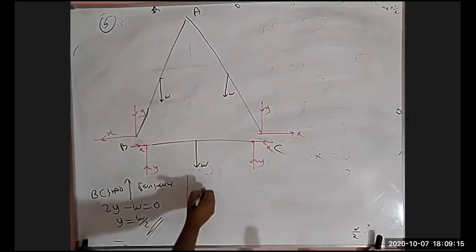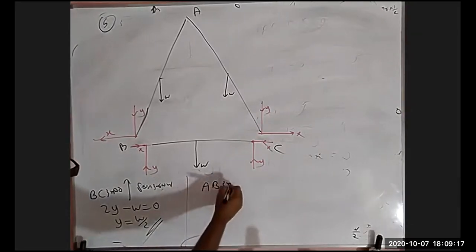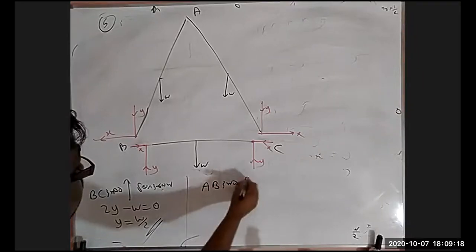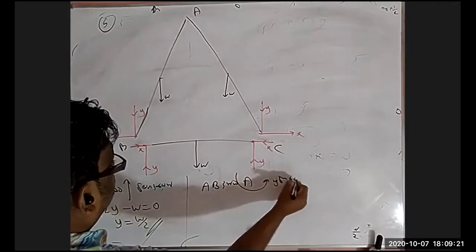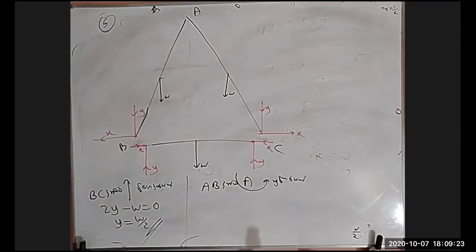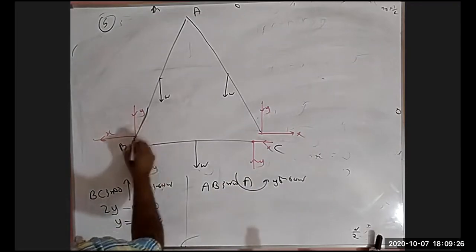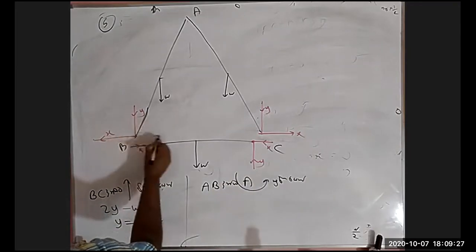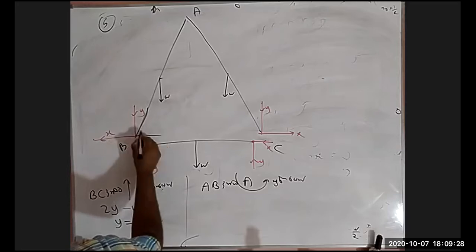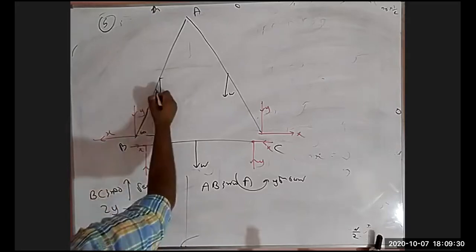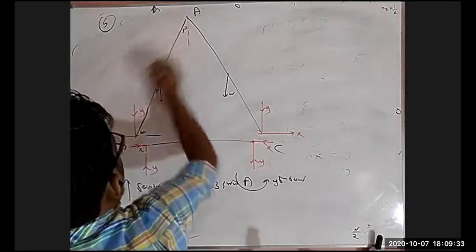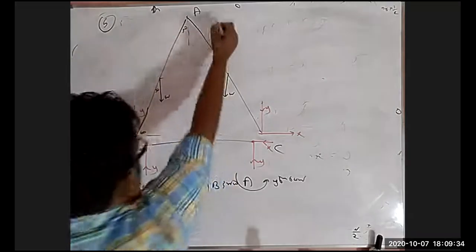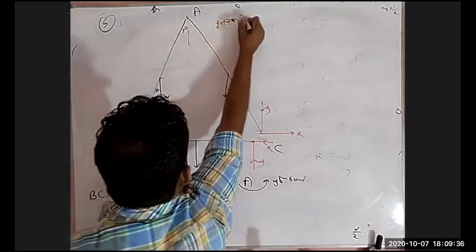A, B is the same. A is the same. A, B is the same. So for example, this is the same. So this is the same. You won't see it.